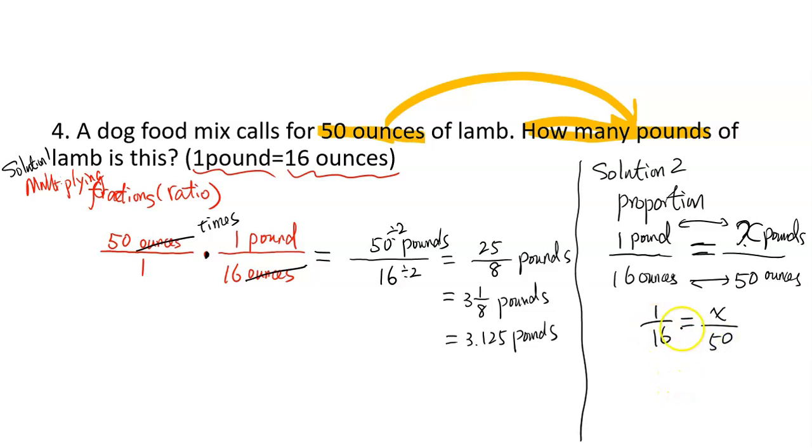And now we can use cross products are equal, and using this fact, and we have 1 times 50, which is 50, and 16 times x. So now we can see if we want to get x by itself, we divide both sides by 16.